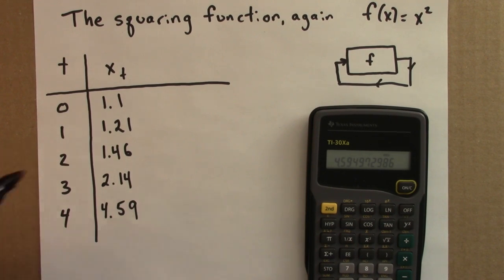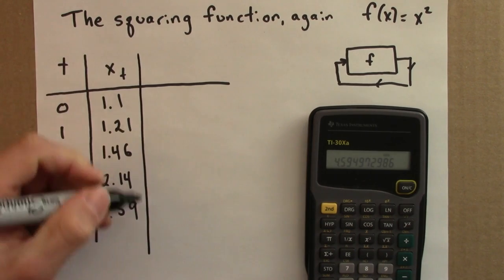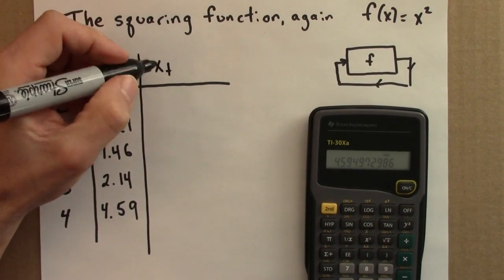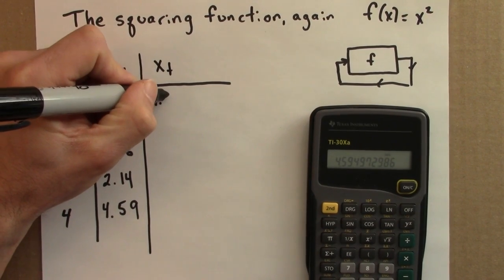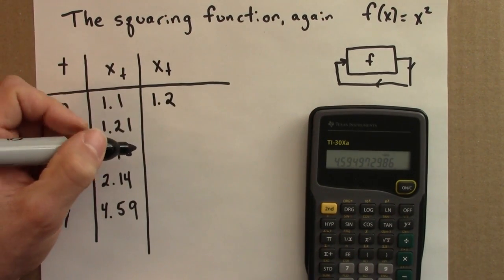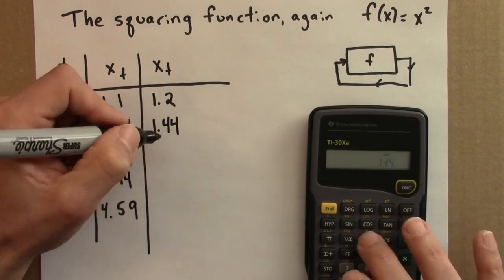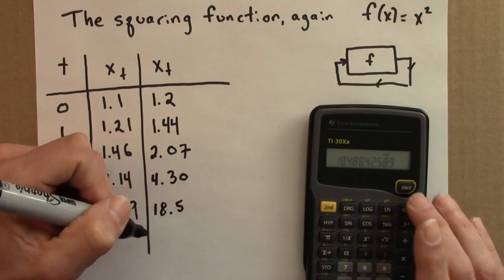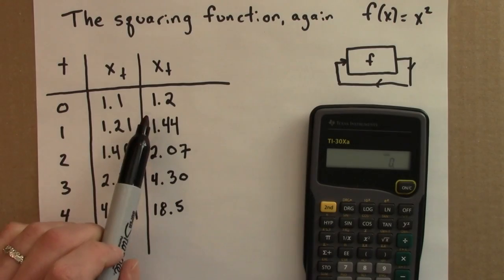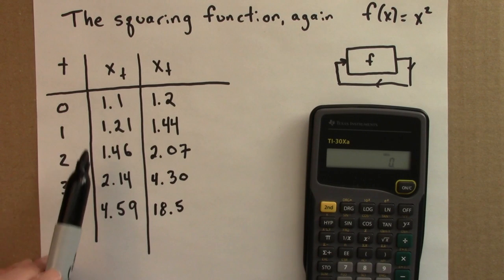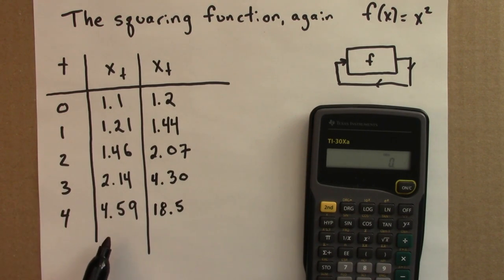We could choose a different seed and we would get a different orbit. Let's say instead of 1.1, I chose 1.2. I'd do the same thing, square again and again to get that orbit. So here's the orbit for the seed 1.2. Note that both orbits get larger. When you square a number larger than 1, the number gets larger. So these numbers will continue to grow.